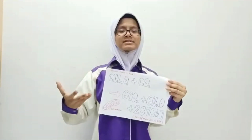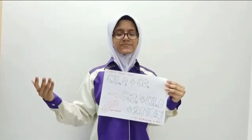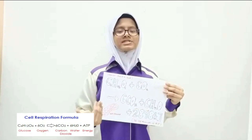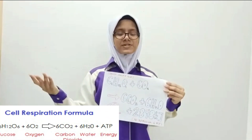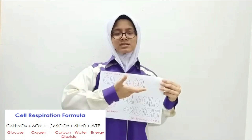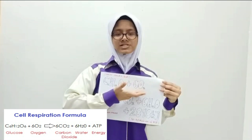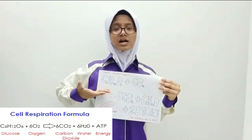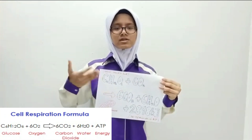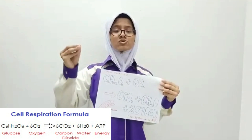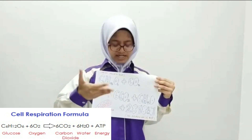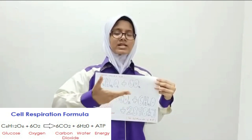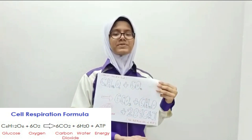Aerobic respiration is the process of breaking down glucose in the presence of oxygen. As we can see here, this is a simplified version of what happens. Oxygen oxidizes glucose completely, producing carbon dioxide, water, and also ATP.